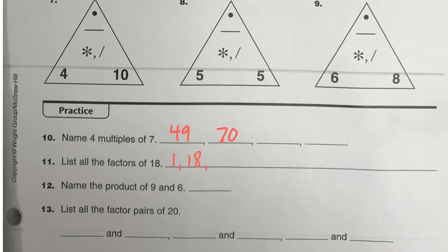And then the last two, I think, on your own, product of 9 and 6. So two factors. What is the product? And what are the factor pairs of 20?